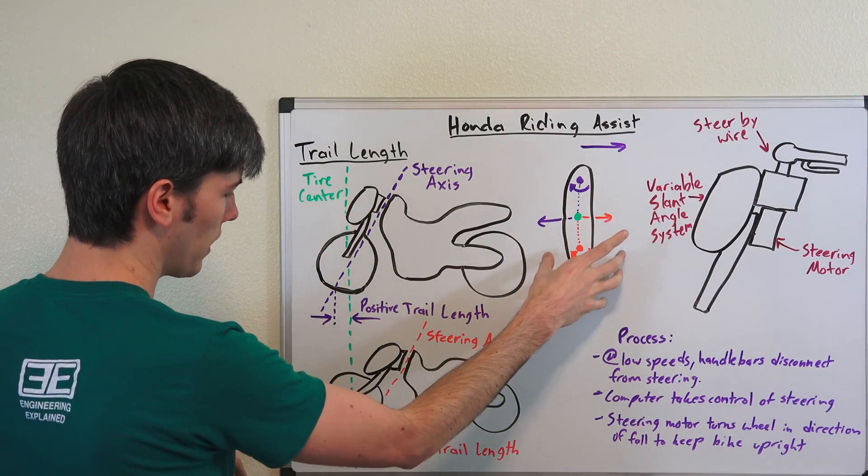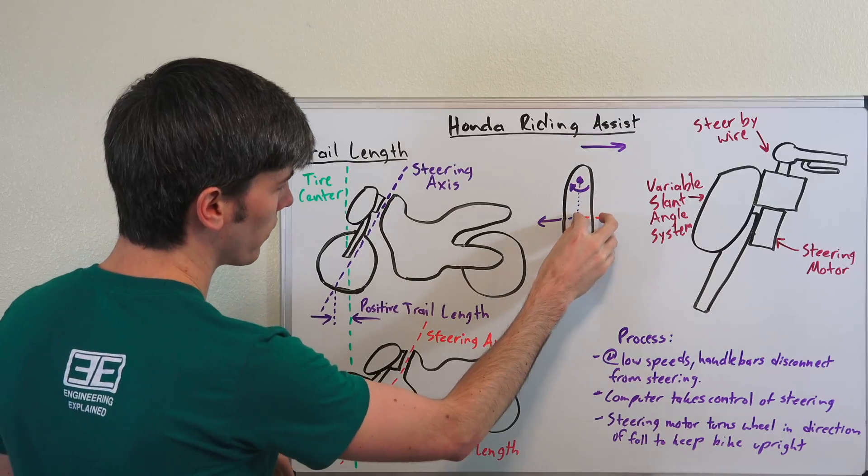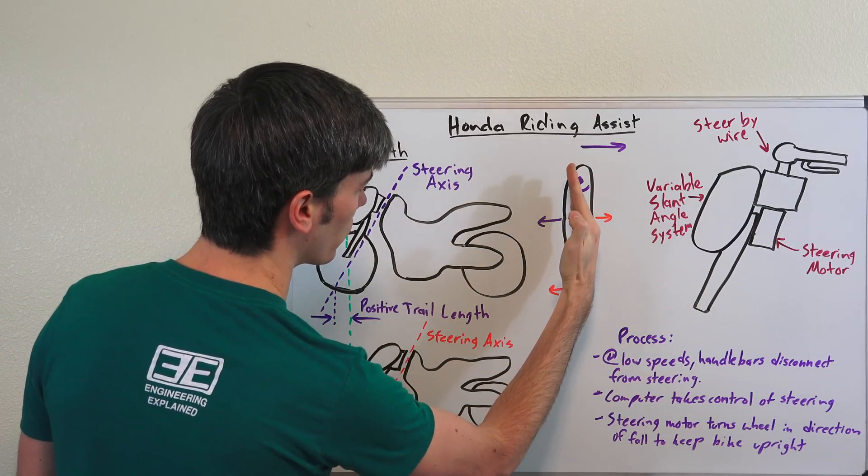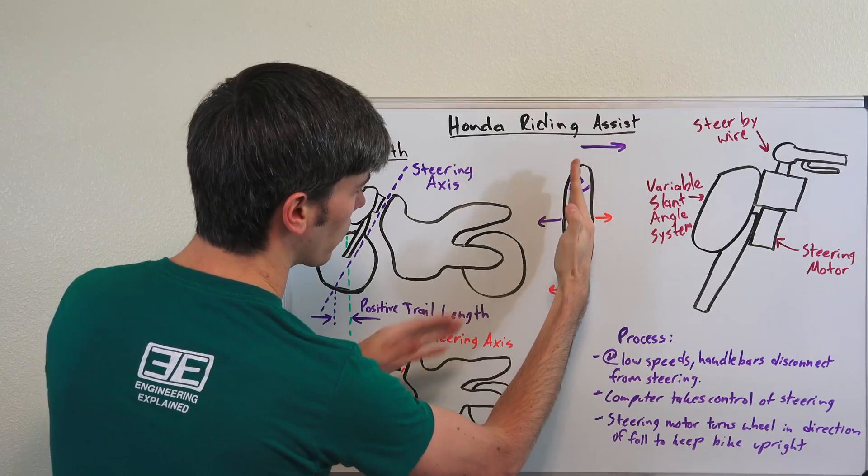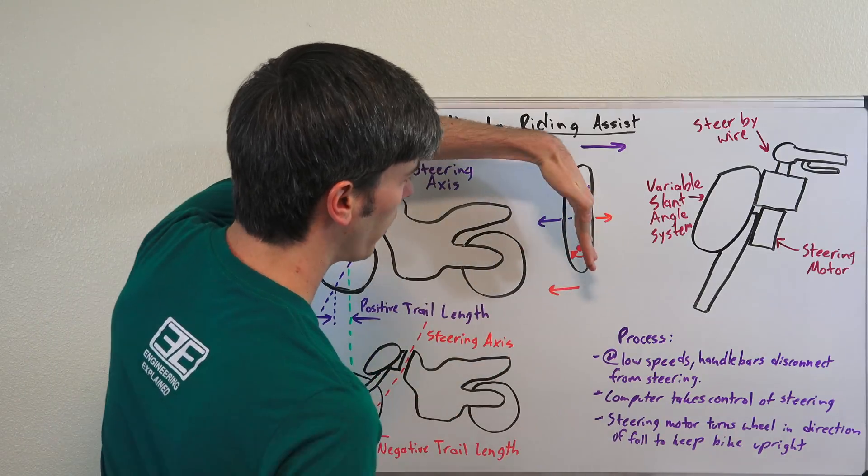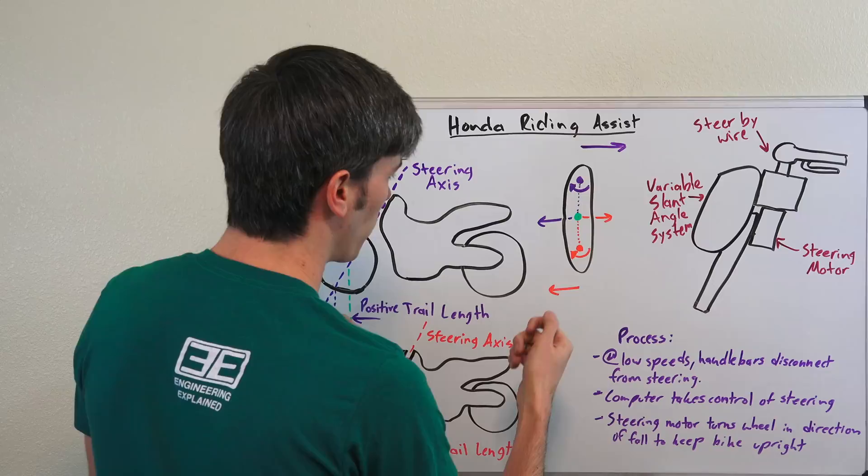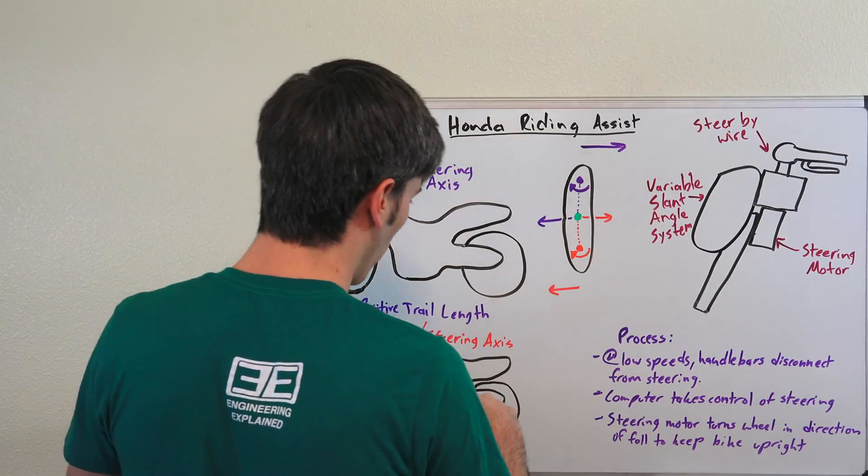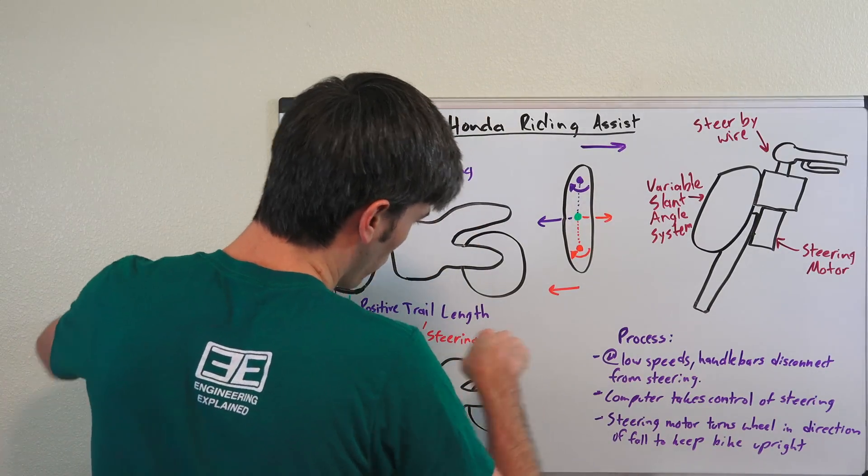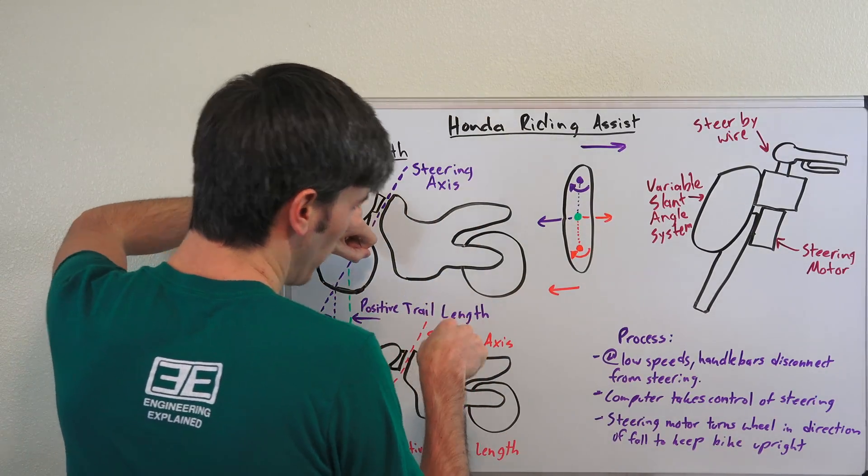With negative trail length, if you have that center there, you're pivoting the tire this direction. You're going to try and turn it like that, pushing the tire that way rather than this way. That's going to push your bike that direction. So if you're starting to fall over this direction and you turn the bike in, you're going to push yourself back up.